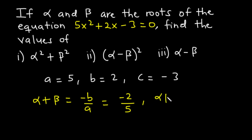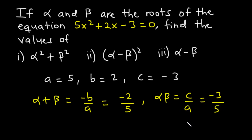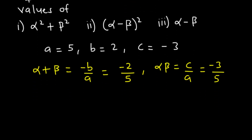Alpha beta, which is the product of roots, is c over a. C is negative 3 and a is 5, so alpha beta is equal to negative 3 over 5. Now let's solve for part i, which is alpha squared plus beta squared.